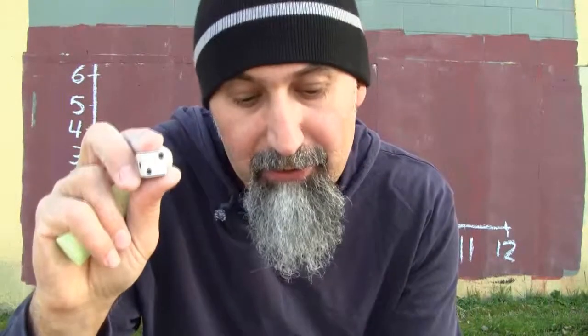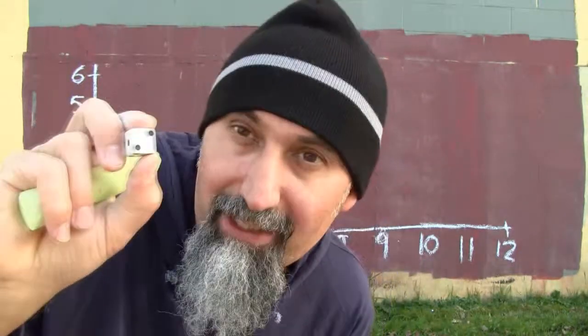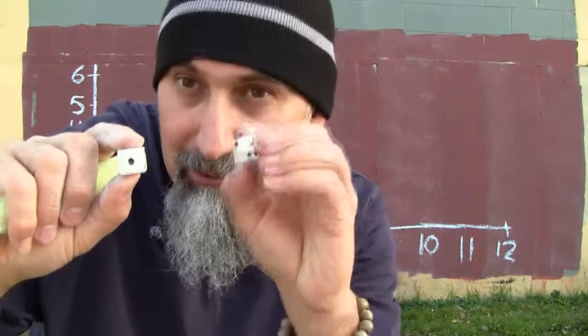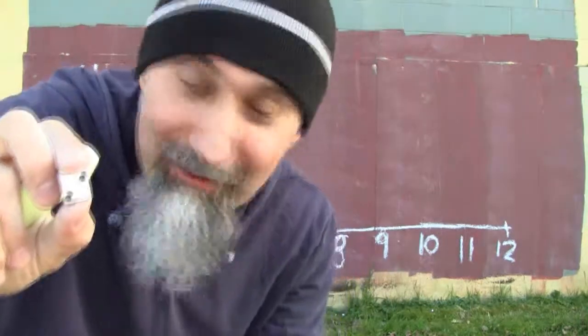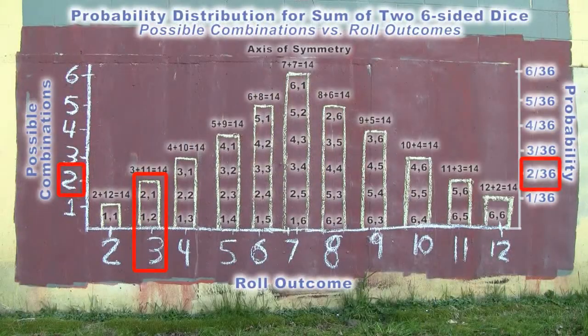To get the number three, you can either get a one on the first die or a two on the first die. If you get a one on the first die, you need a two on the second die. If you get a two on the first die, you need a one on the second die. So it's two out of six times one out of six, because no matter what you get on the first die, you need a specific number on the second die. Two out of six times one out of six equals two out of 36. There are two possible combinations: a one-and-two and a two-and-one.